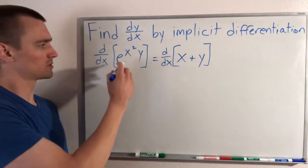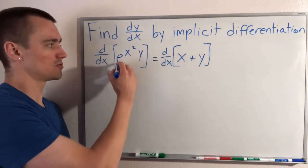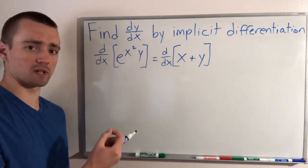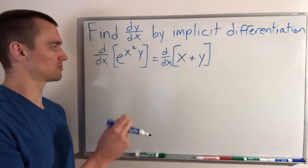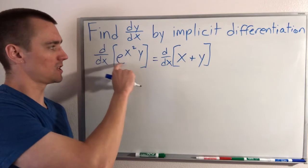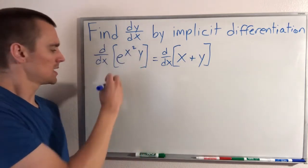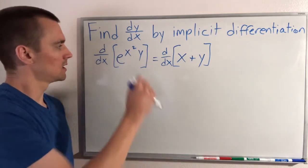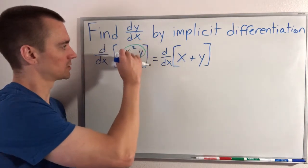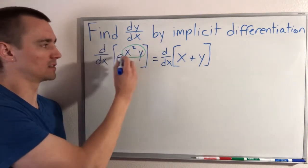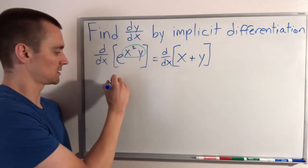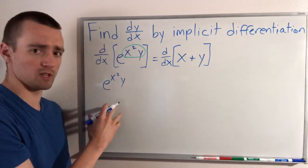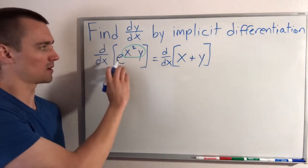What I mean by that is, first we want to think of taking the derivative of e to all this stuff. Remember, the derivative of e to the x with respect to x is just e to the x. So if we're taking the derivative of e to all this stuff by chain rule, we take the derivative of the outside — leaving x squared y as our inside function — which gives us e to the x squared y, because the derivative of e to the x is just e to the x. So the outside part isn't really going to change anything.